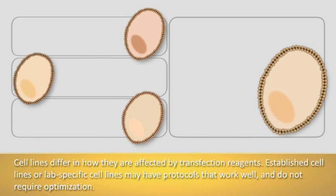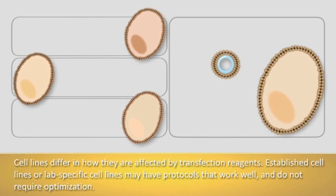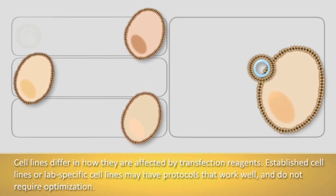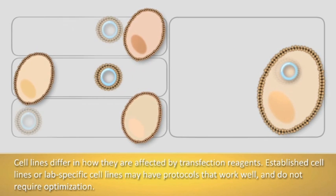Cell lines differ in how they are affected by transfection reagents. Established or lab-specific cell lines may have existing protocols that work well, thus saving someone new to transfection the work of optimizing the transfection conditions.